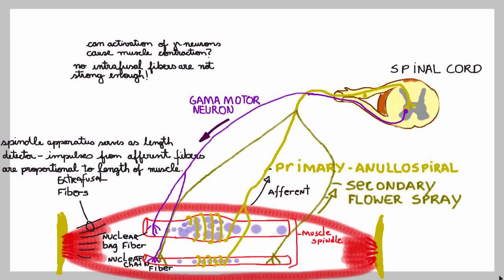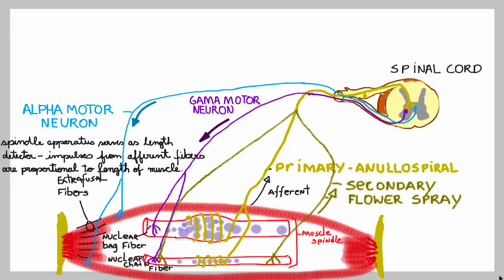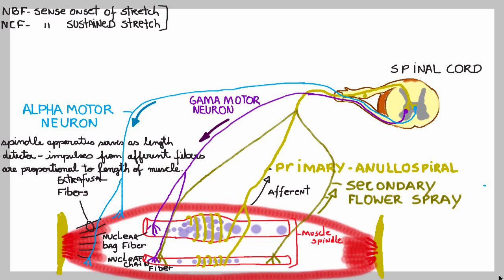What you also have to cause a change in shape of that muscle is another motor neuron that can promote the contraction of the extrafusal fibers — this is known as the alpha motor neuron, carrying information towards the muscles through an efferent pathway. Going back to the muscle spindles, you'll see they can sense two different types of stretch: the nuclear bag fibers can sense the onset of stretch, and the nuclear chain fibers can sense a sustained stretch.